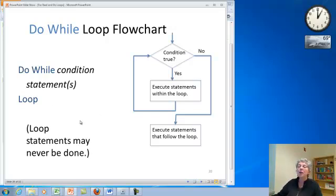Here's a little flow chart. So what we're doing is as we start the loop, we test the condition and see if it's true. If it is true, we go ahead and execute the statements inside the loop. And we keep doing that until the condition becomes false, at which point we go on to whatever follows the loop. So in particular, again, the loop statements may never be done.